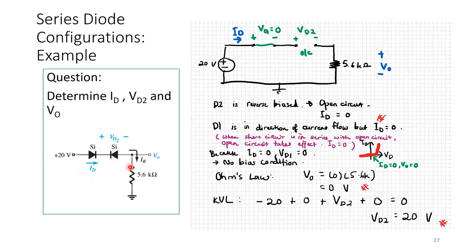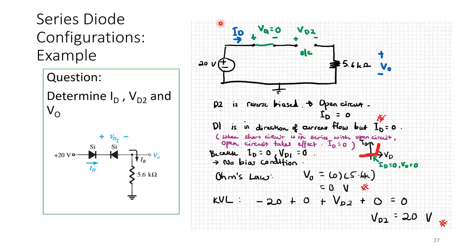Looking at D2: it is reverse biased, so it becomes an open circuit and ID equals 0. D1 is in the direction of current flow and the voltage is enough to turn it on, but ID is already forced to 0 by D2. When a short circuit is in series with an open circuit, the open circuit takes effect, and ID equals 0.